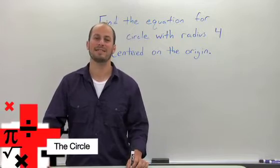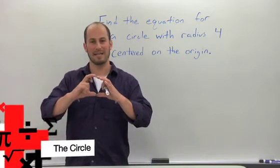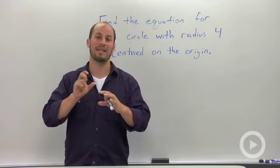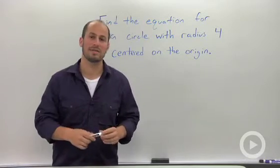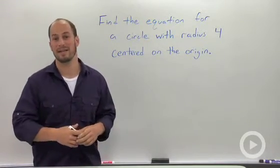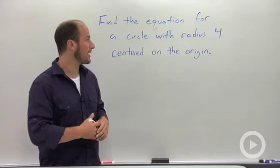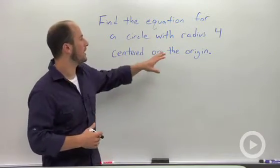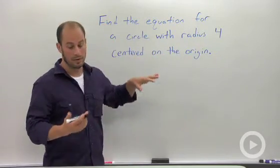As you know, a circle is an infinite set of points that are equidistant from the center. We're going to find the equation for a circle with radius 4 centered on the origin.